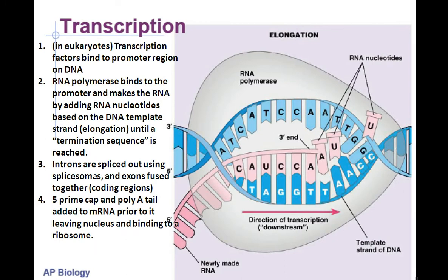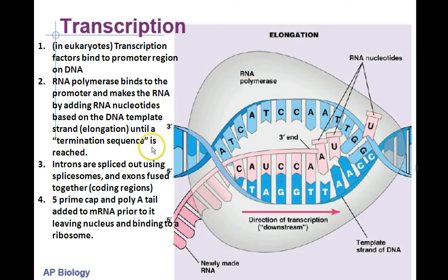Remember, transcription happens in the nucleus. In eukaryotes, transcription factors — proteins that turn on regions of DNA — bind to the promoter region first. This doesn't happen in prokaryotes like bacteria. Then RNA polymerase binds to the promoter and makes the RNA by adding RNA nucleotides based on the DNA template strand — elongation — until a termination sequence is reached. The template strand is actively used to make messenger RNA. The other strand is called the coding strand, and it is not actively used to make messenger RNA.